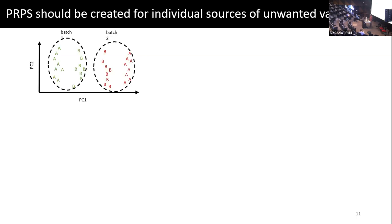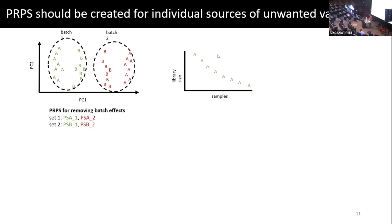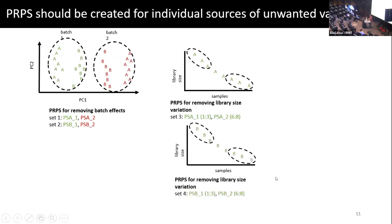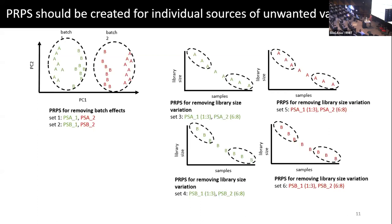How can we remove library size using PRPS, along with batches? We had the PRPS for batch; now we're going to have another PRPS set for library size. In the first batch, we order samples from biological group A and take the top three — average them into a pseudo sample — and the bottom three, average them into another pseudo sample. These two become pseudo replicates, and the difference between them is going to be library size. We do the same for group B in batch one, then batch two, getting another set of PRPS for library size. You can repeat this for purity: order your samples based on purity from high to low, match them up, and put them into RUV3. RUV3 can remove library size, batches, and purity all in one go.